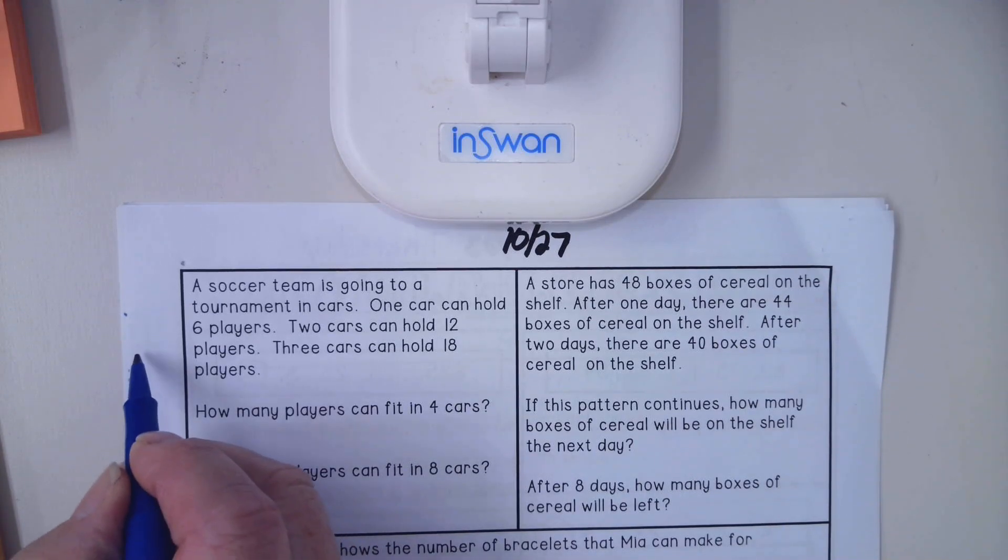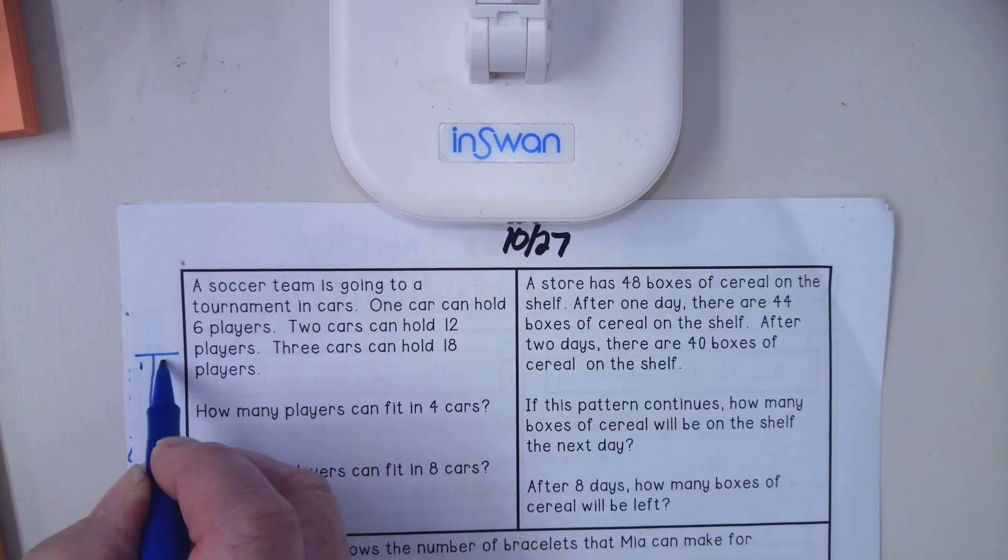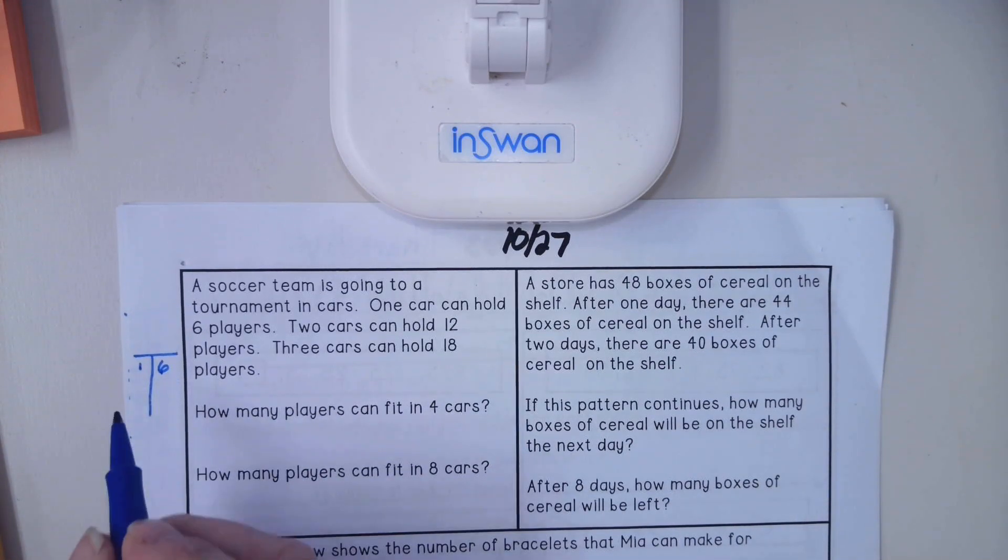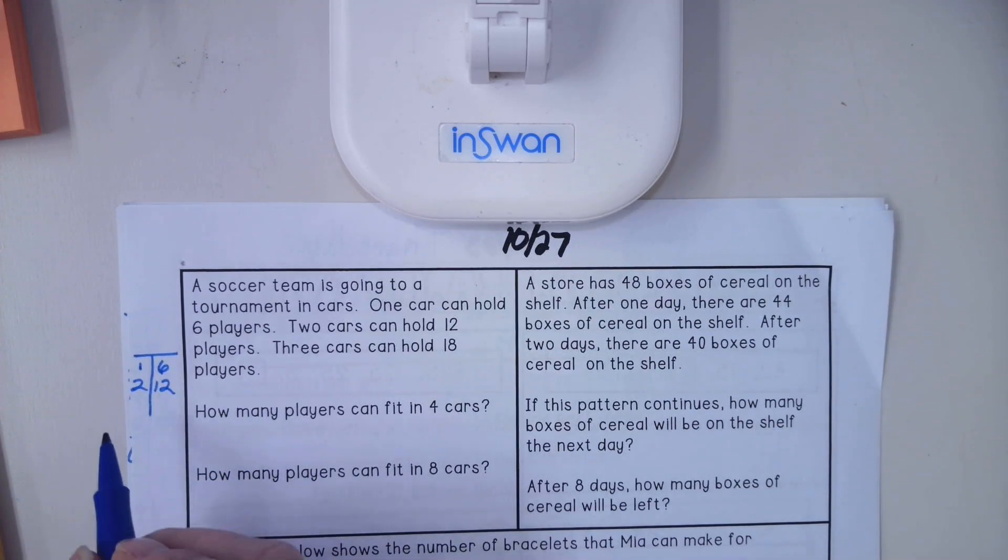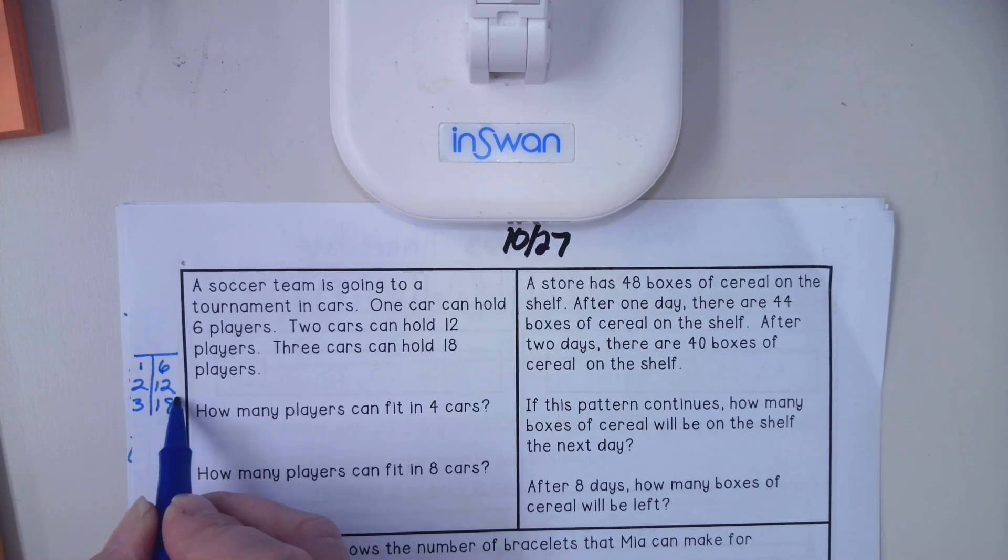So I'm going to make my chart just so I can keep track. I have one car holds six players, two cars can hold 12 players, three cars it says can hold 18 players.